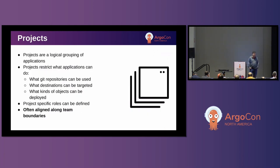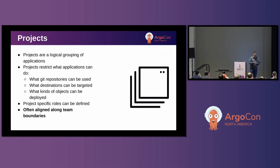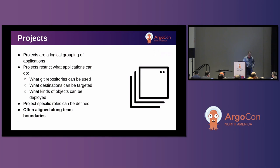From a project perspective, app projects in Argo CD are really just a logical grouping of applications that allow you to organize things within an Argo CD environment for your tenants. They restrict what your applications can do — you can blacklist resources, manage what can and can't be deployed. You can also assign project-specific roles, which becomes very important from a multi-tenancy point of view. App projects are typically aligned along team boundaries, so Team A might have their own app project with different permissions from Team B.